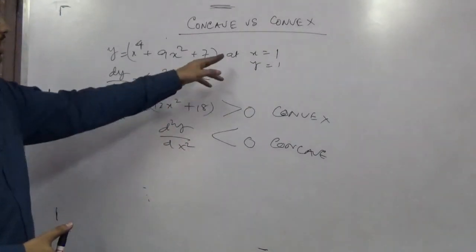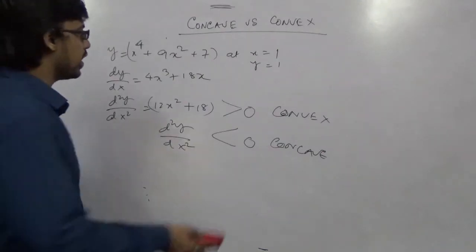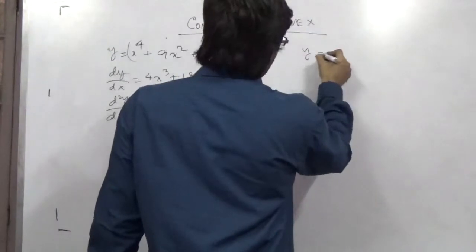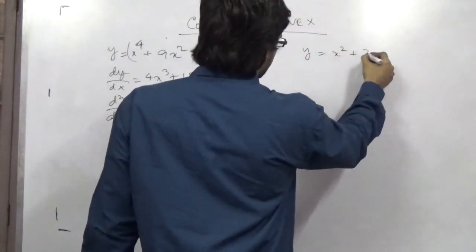And what happens if they don't give you these points? Then also you can find it out. Okay. For example, y equal to x squared plus 7x.